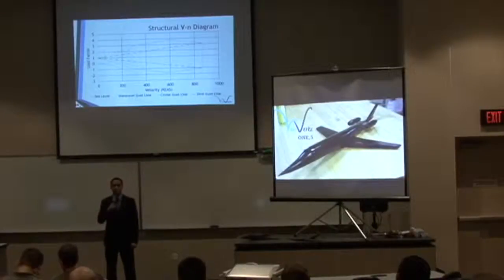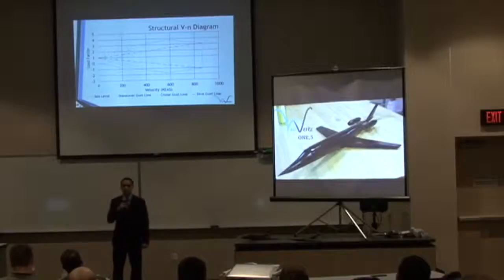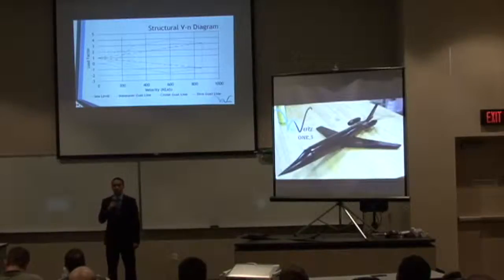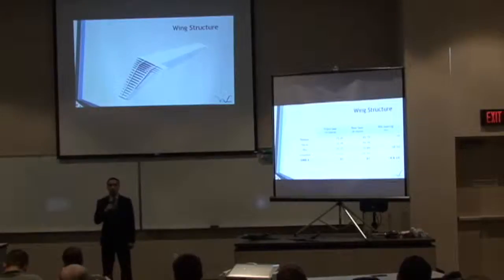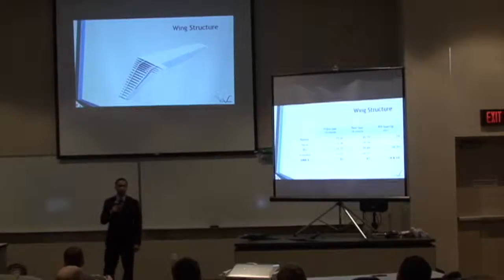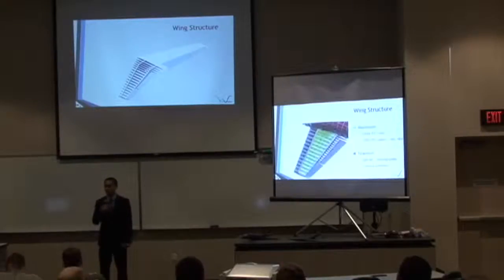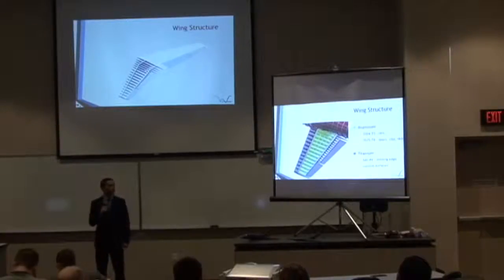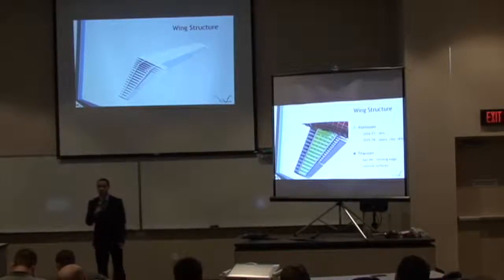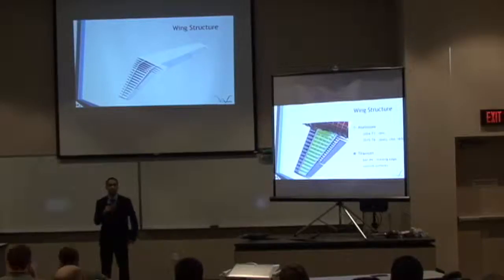First on the primary screen is the structural VN diagram of 1-5. This VN diagram was constructed at sea level, including gust lines constructed from CFR Part 25 regulations. From this plot, we have a maximum load factor of 3.8 Gs. The primary screen illustrates the wing structure of 1-5. This design results in a front spar location at 20% chord, rear spar location at 67% chord, and rib spacing of 18 to 24 inches. Materials used in the wing structure: red represents aluminum alloys 2024-T3 for the skin, and 7075-T6 for the spars, ribs, and skin; black represents titanium alloy 6AL-4V for the leading edge and control surfaces.